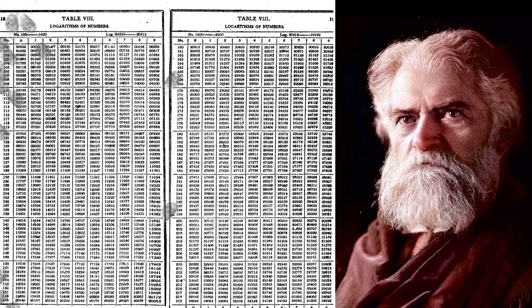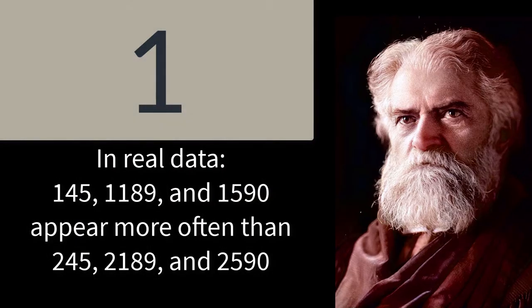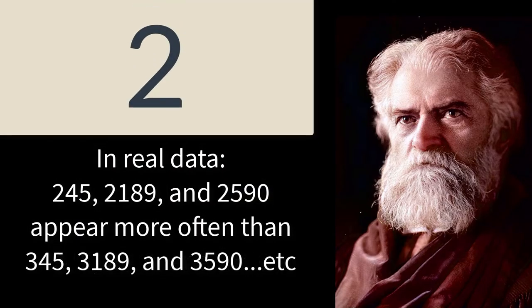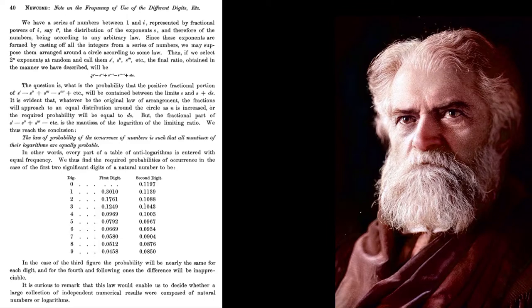He discovered that in real life data, more numbers begin with 1 than any other digit. The next most popular digit at the beginning of a number is 2, then 3, etc., all the way to 9. Here's Newcombe's paper in which he describes the distribution of first digits.